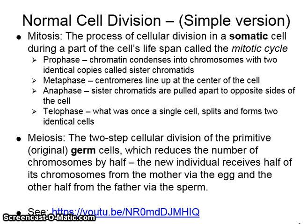In mitosis, which is the way that normal body cells divide and replicate, there are stages. The first is called prophase, where the chromatin condenses into chromosomes with two identical copies called sister chromatids. In metaphase, the centromeres line up at the center of the cell. In anaphase, the sister chromatids are pulled apart to opposite sides of the cell. In telophase, the single cell splits and forms two identical cells.